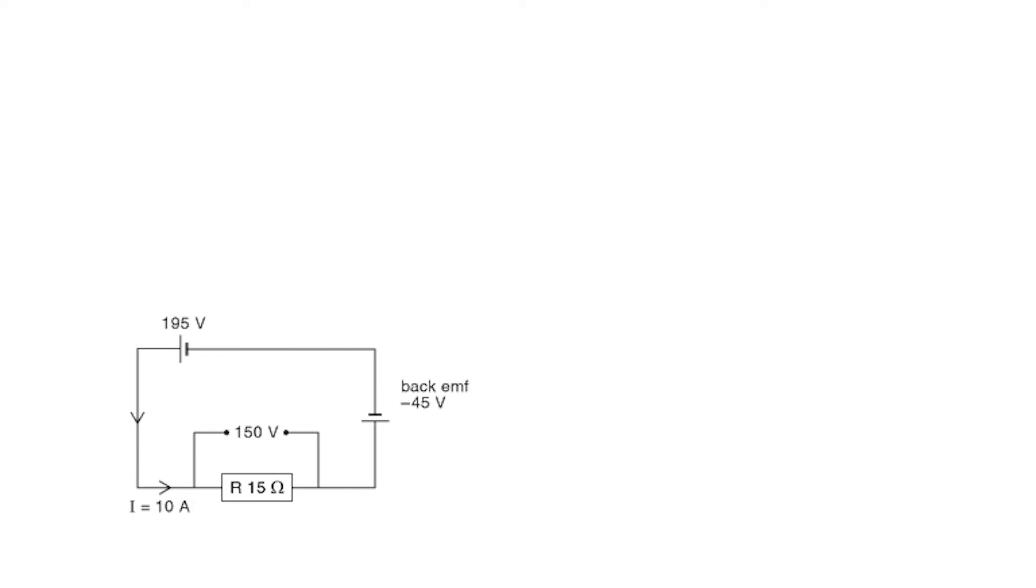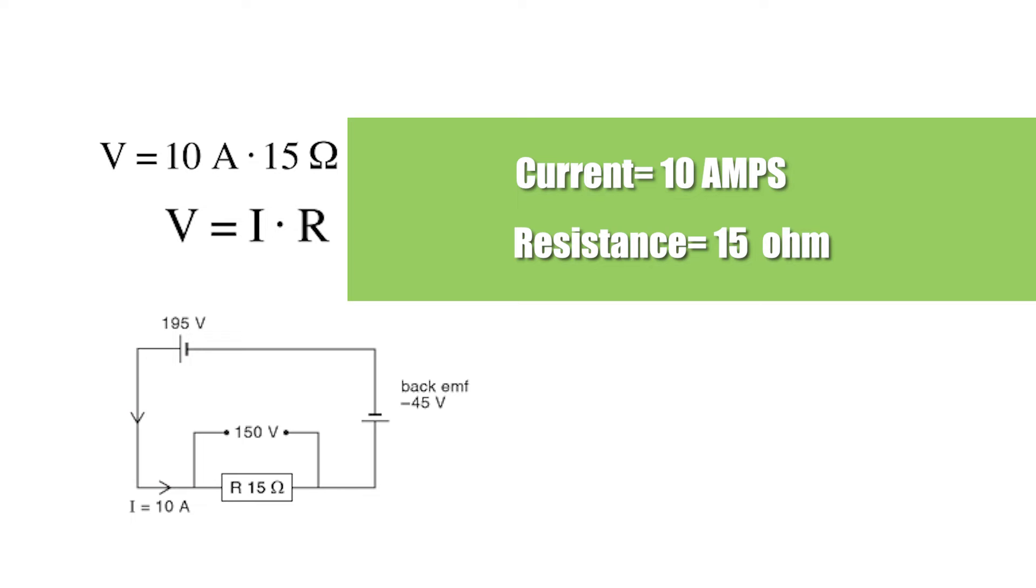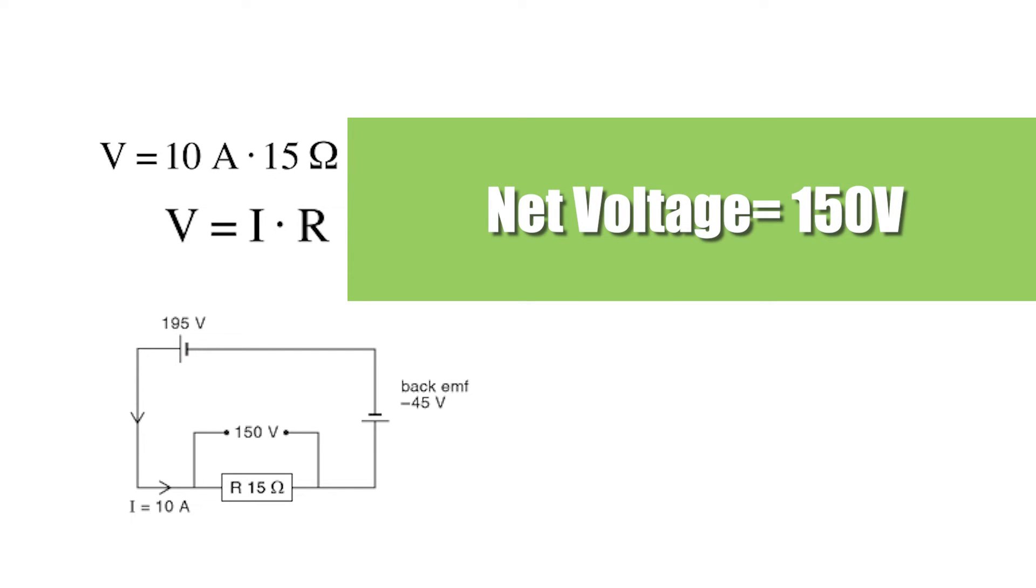Again, using our simple motor circuit diagram, we can check this with Ohm's law, which states that voltage equals current multiplied by resistance. In this circuit, the current is 10 amps and the resistance is 15 ohms, so the net voltage is 150 volts, in agreement with our analysis above.